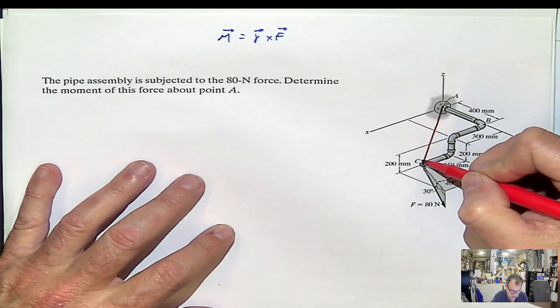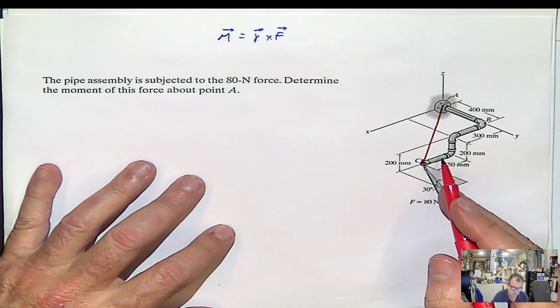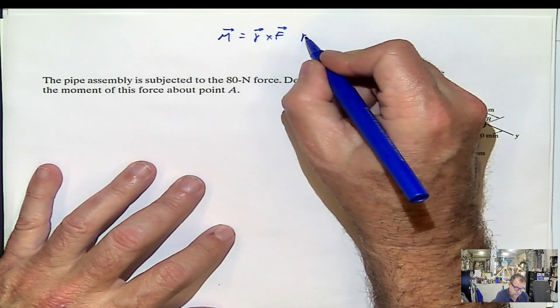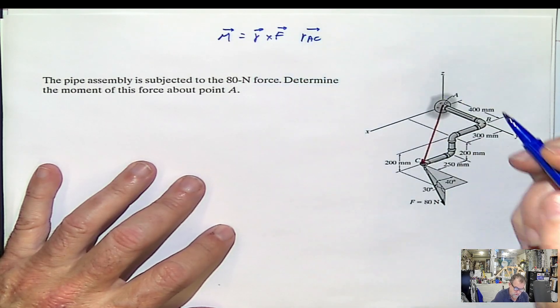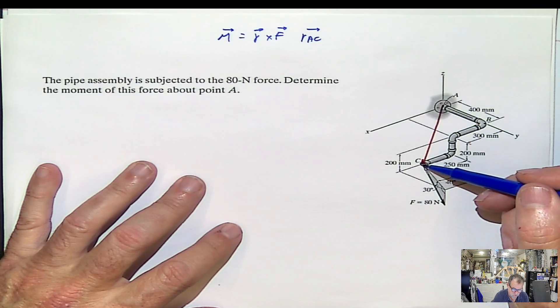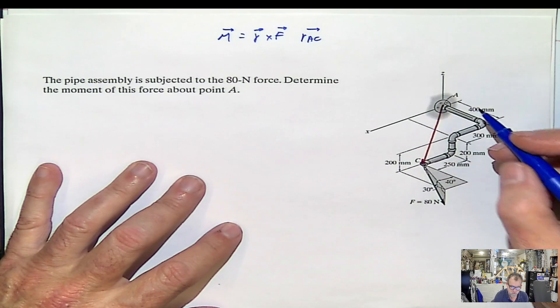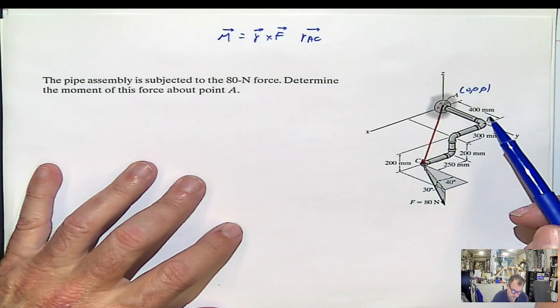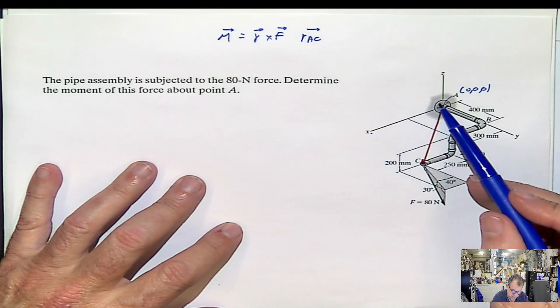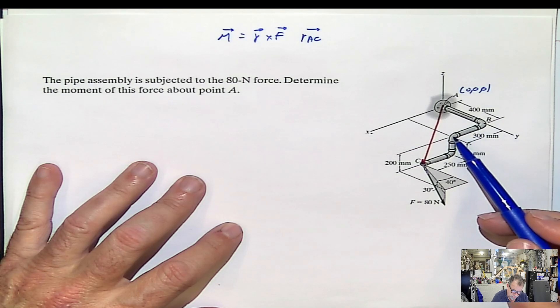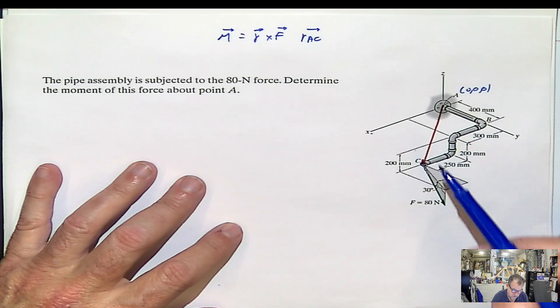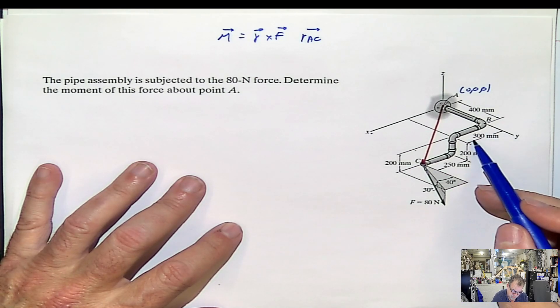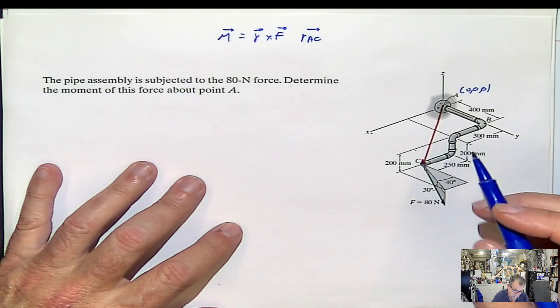So in this case, that will be R_A,C. It can be easily calculated if we find the coordinates of C and the coordinates of A. The coordinates of A are 0, 0, 0. And the coordinates of C are, if you come in the x direction, that will be 300 up to this point and 250 up to this point. So that would be 550, coordinate C, 550 in the x direction.